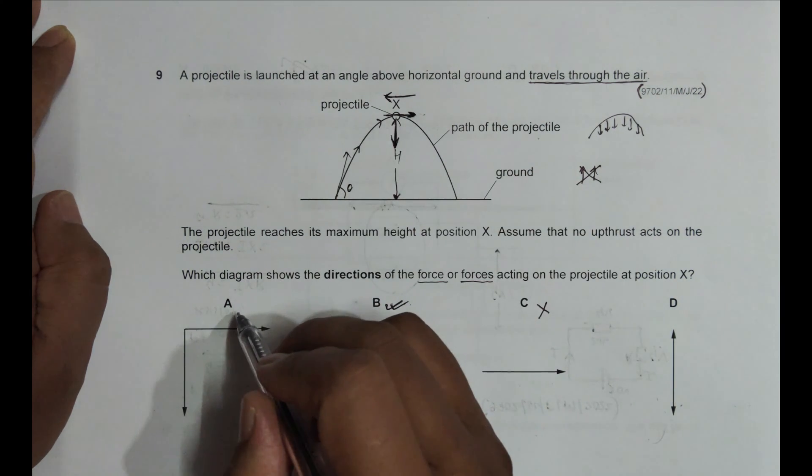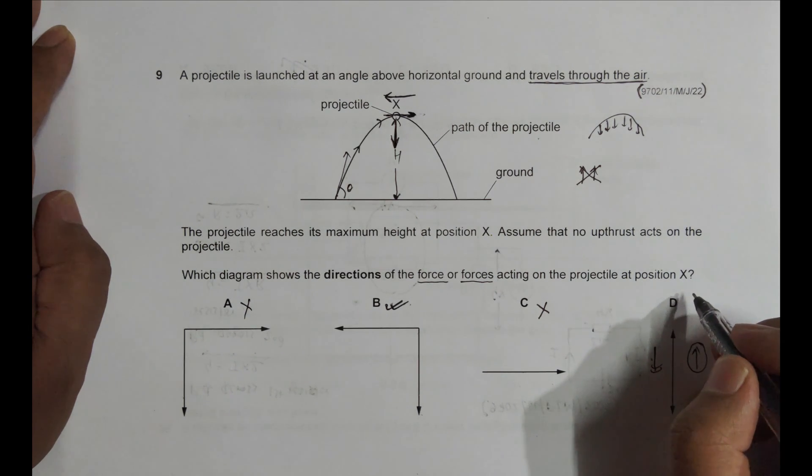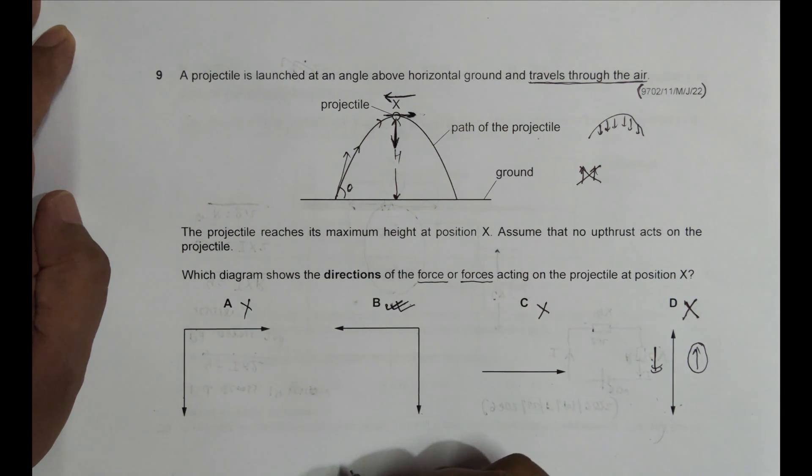As well as the force here, so this does not qualify. And here we have one of the forces like this, so this force does not exist here. That's why choice number D is also not correct. So the only correct choice is choice number B, which is shown in the diagram.